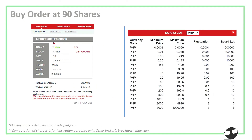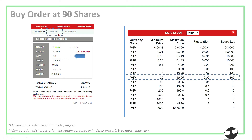What if you try to buy below the minimum board lot — say 90 shares? If you plug that order, the system will actually prompt that your order is not sent because it's an invalid quantity, simply because you are in a normal order. You have to shift to the odd lot section to trade quantities below the minimum.